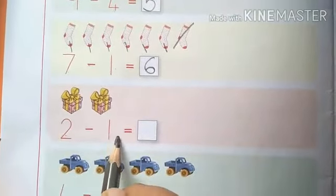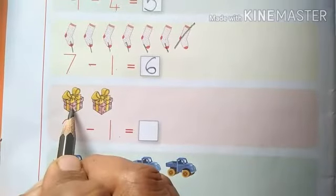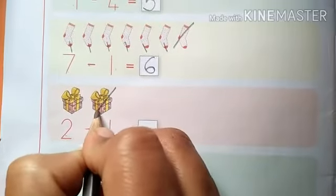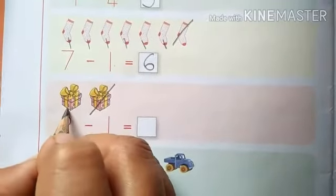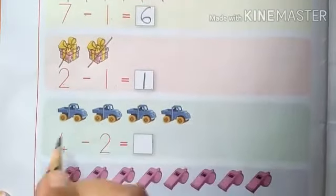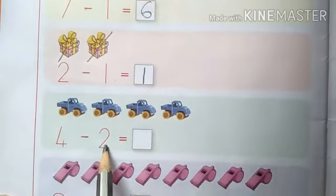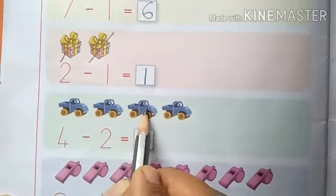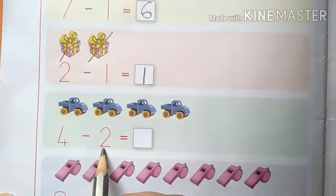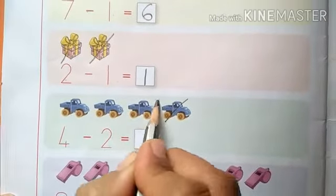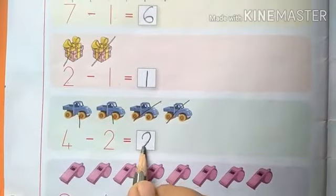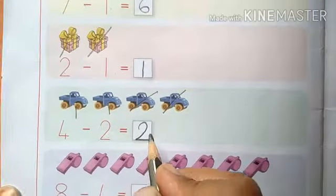Now 2 minus 1 — gift box hain na? Kitne box hain? 2. 2 minus 1 — to 1 object humen isme se kaatna hai, to kitne bache? 1. Okay, now next: 4 minus 2 — 1, 2, 3, 4. 4 objects hain. Isme se humen kitne kaat karne? 2 — 1, 2. How many objects are left? 1, 2. Yahan likhenge hum: 2. Okay.